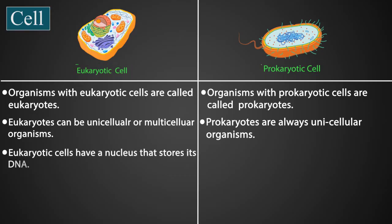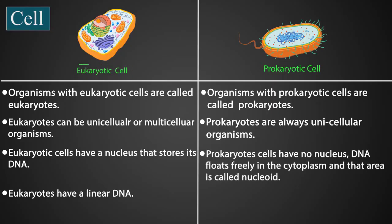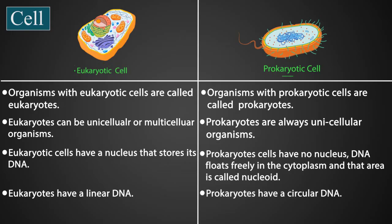Eukaryotic cells have a nucleus that stores their DNA, and eukaryotes have a linear DNA. Prokaryotic cells have no nucleus; DNA floats freely in the cytoplasm, and that area is called a nucleoid. So eukaryotes have a nucleus, prokaryotes have no nucleus, prokaryotes have circular DNA, whereas eukaryotes have linear DNA.